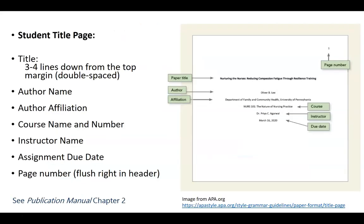Here is what a student title page looks like. There's the page number at the top right. The title goes down about three or four lines from the top — remember, we're using double spacing. You'll have the author's full name, the affiliation indicating the department and the university such as Florida Atlantic, your course number and name, your instructor's name however they prefer it, and the assignment due date.